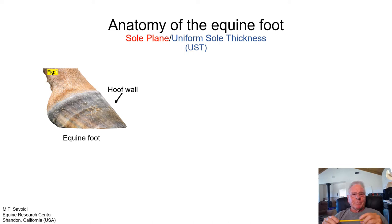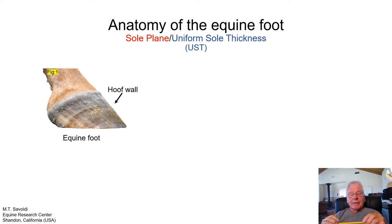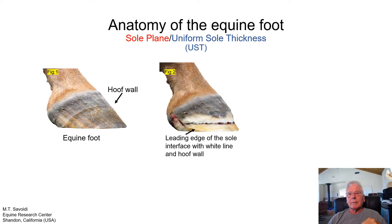Let's talk a little bit about the anatomy of the equine foot — this will be a simple discussion to bring clarity to the sole plane and uniform sole thickness. In Figure 1 we see the equine foot with the hoof wall visible. This foot has been trimmed to the sole plane, so you're looking at the actual foot on this animal at that moment in time. When we remove the distal border of the hoof wall, we expose the leading edge of the sole where it interfaces with the white line and the hoof wall. This area is approximately 11.5 millimeters.